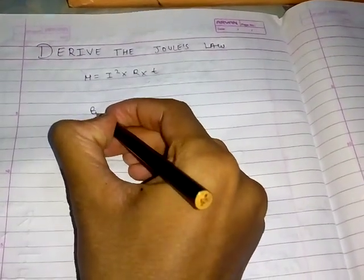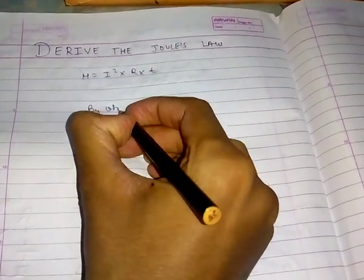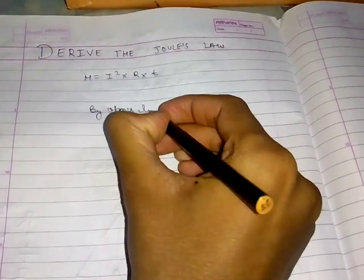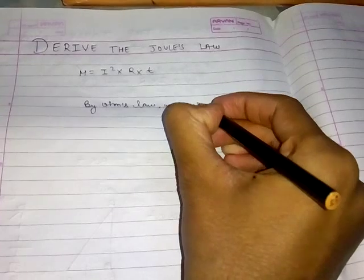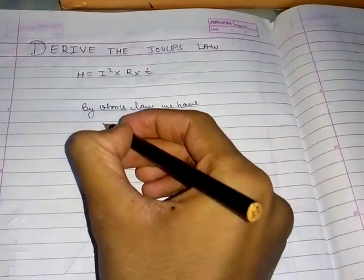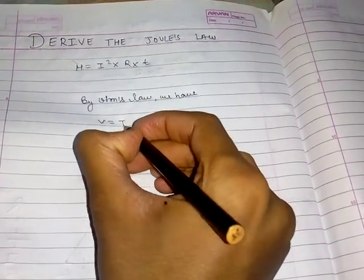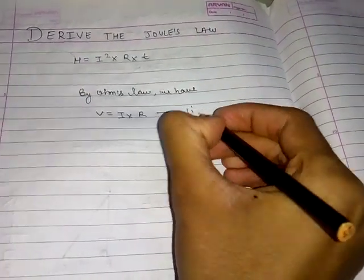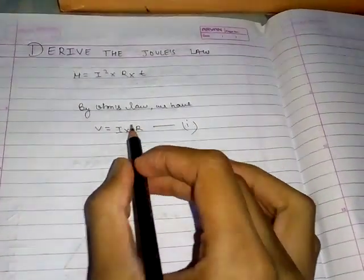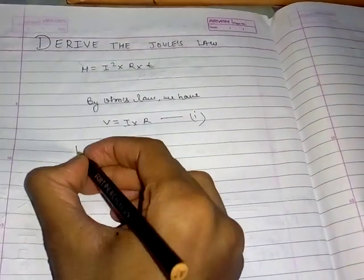By Ohm's law, we have V equals I into R. This is equation 1.